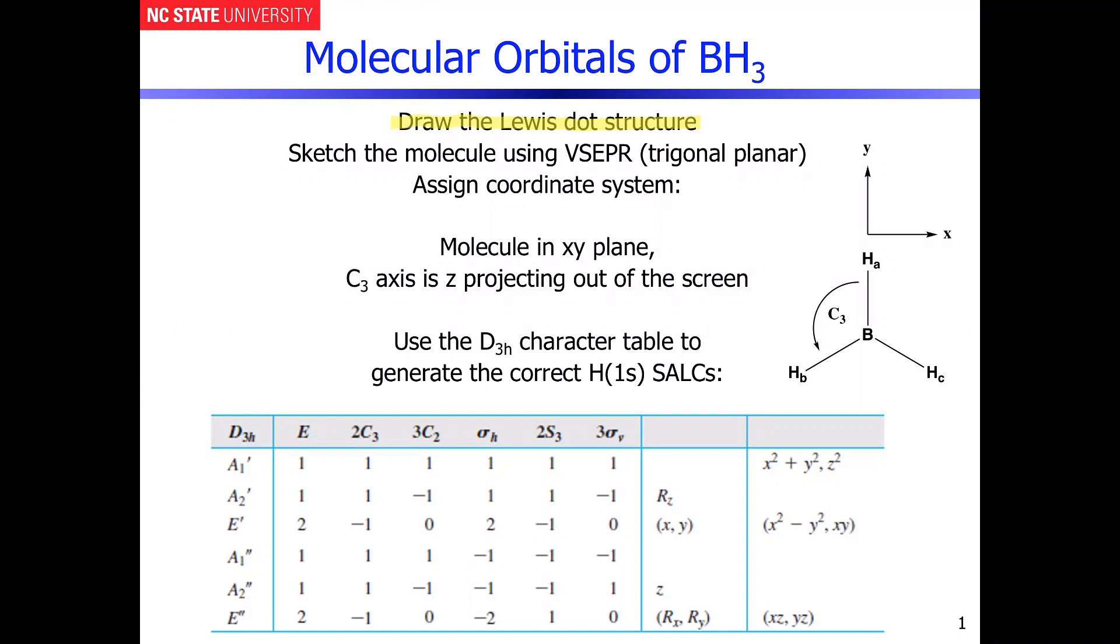And the molecular shape through valence-shell-electron pair repulsion theory is trigonal planar, as depicted, as you can see right here. So the molecule is in the plane of the screen, and it's effectively an equilateral triangle.